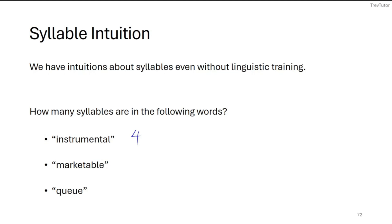So, what about 'marketable'? Marketable — this is going to be four syllables. Now, if we take a look at the first two examples, we might guess that it's the amount of vowels that we have that determines how many syllables we have. Like, in 'instrumental' and 'marketable,' these both have four vowels and therefore four syllables. And it's not quite right, but it's also not quite wrong.